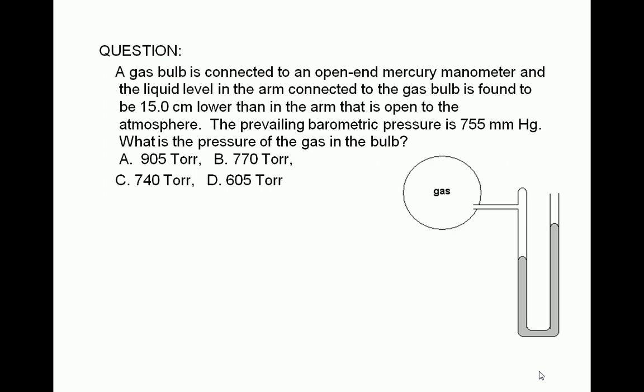Here's an illustration of the apparatus. The U-shaped tube on the right is the manometer. The atmosphere is pushing down on the mercury in the open-end. The pressure due to the atmosphere is called the barometric pressure, which is given in the problem as 755 millimeters mercury.